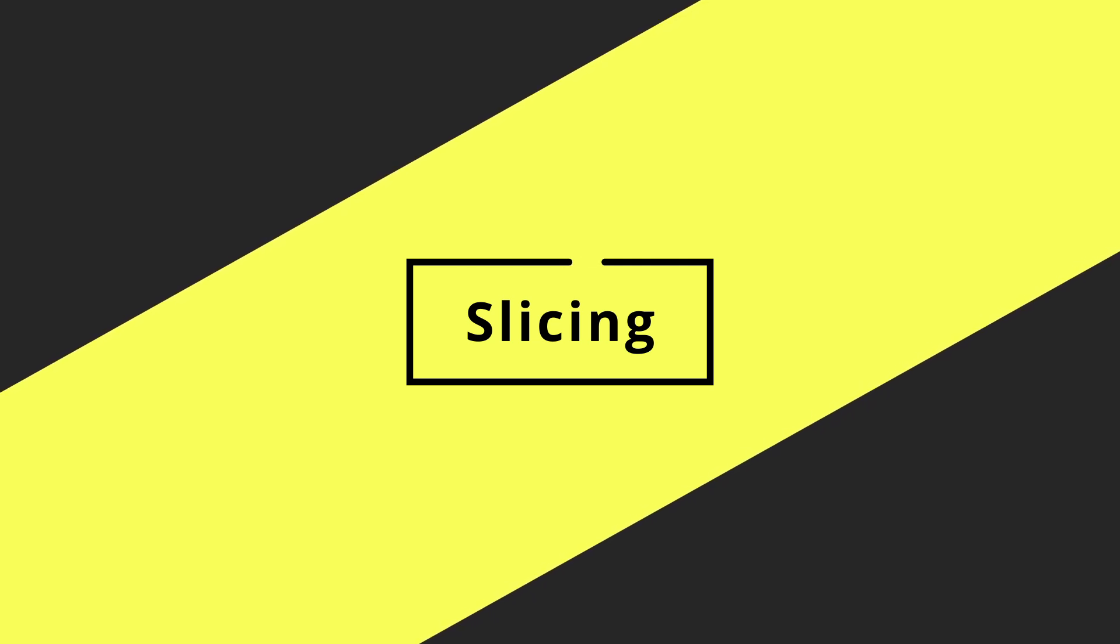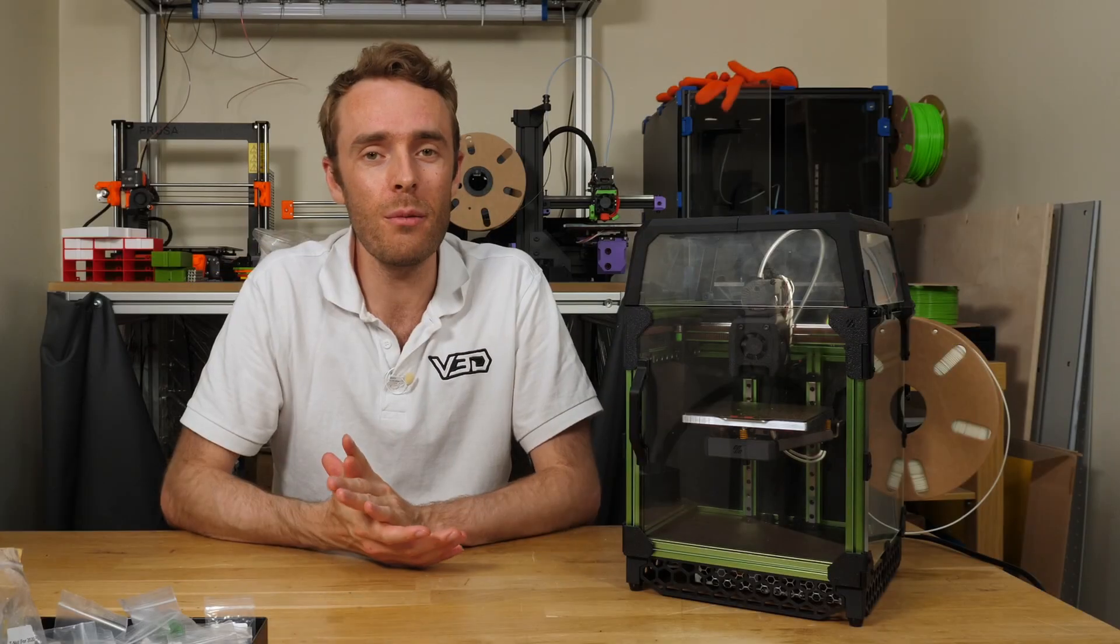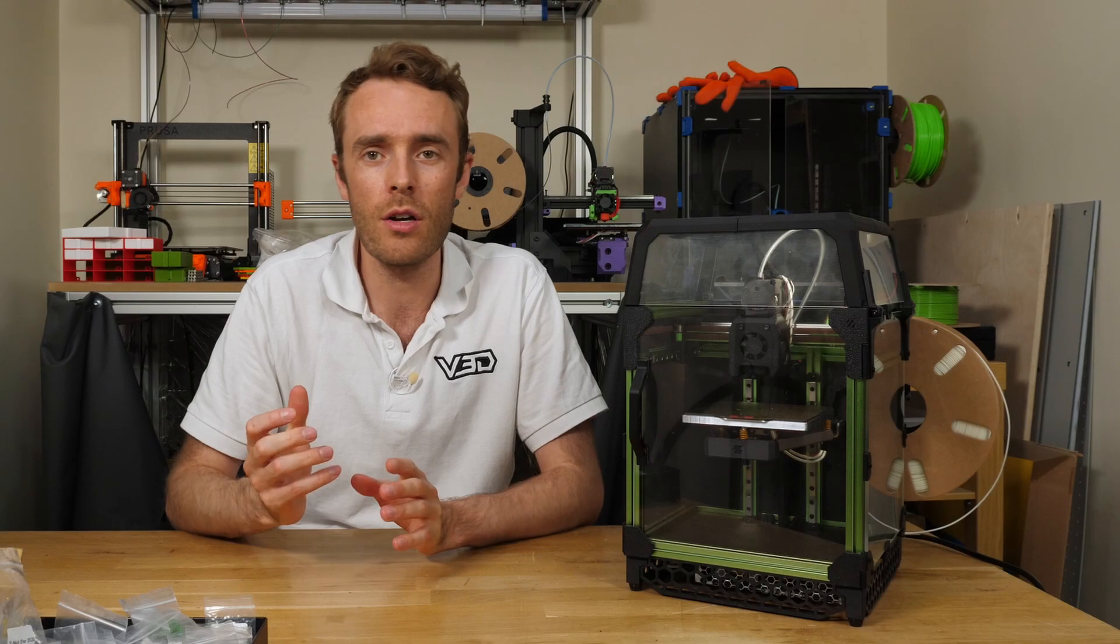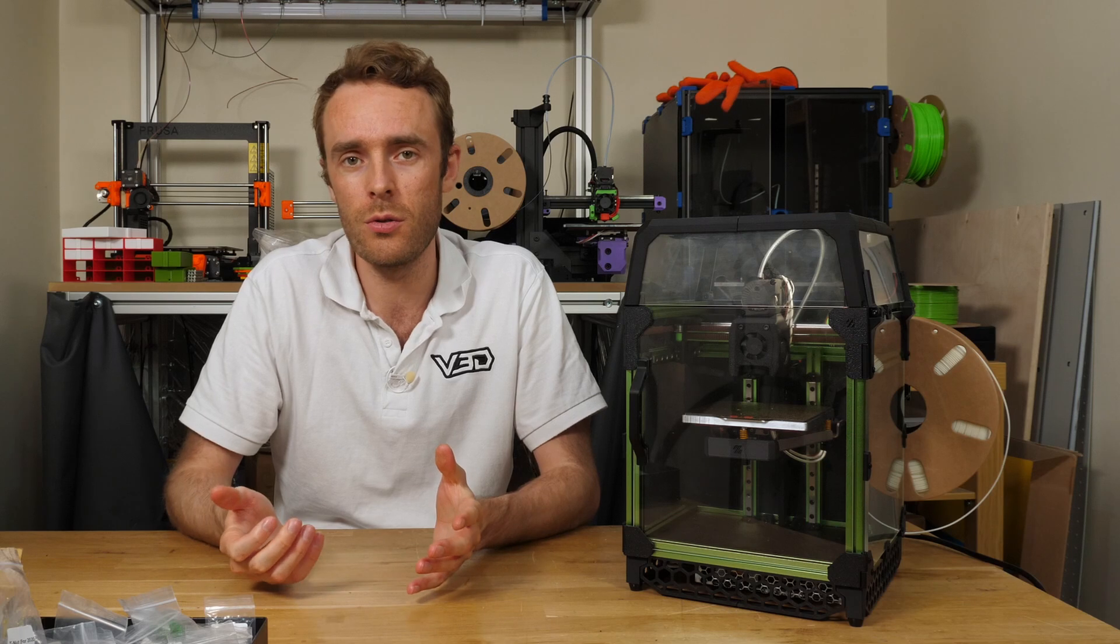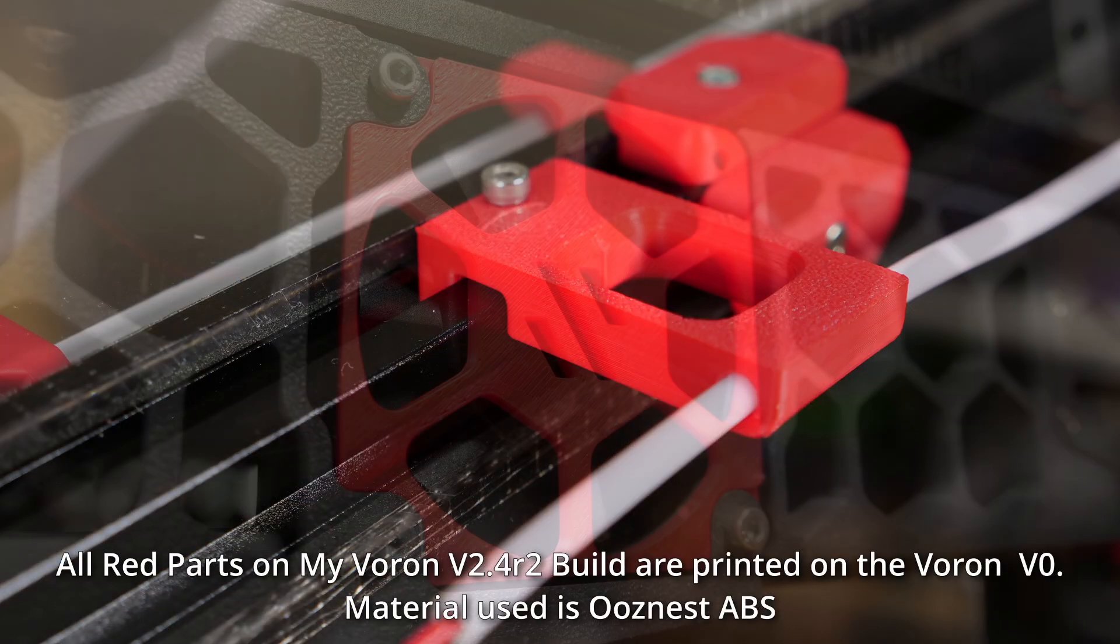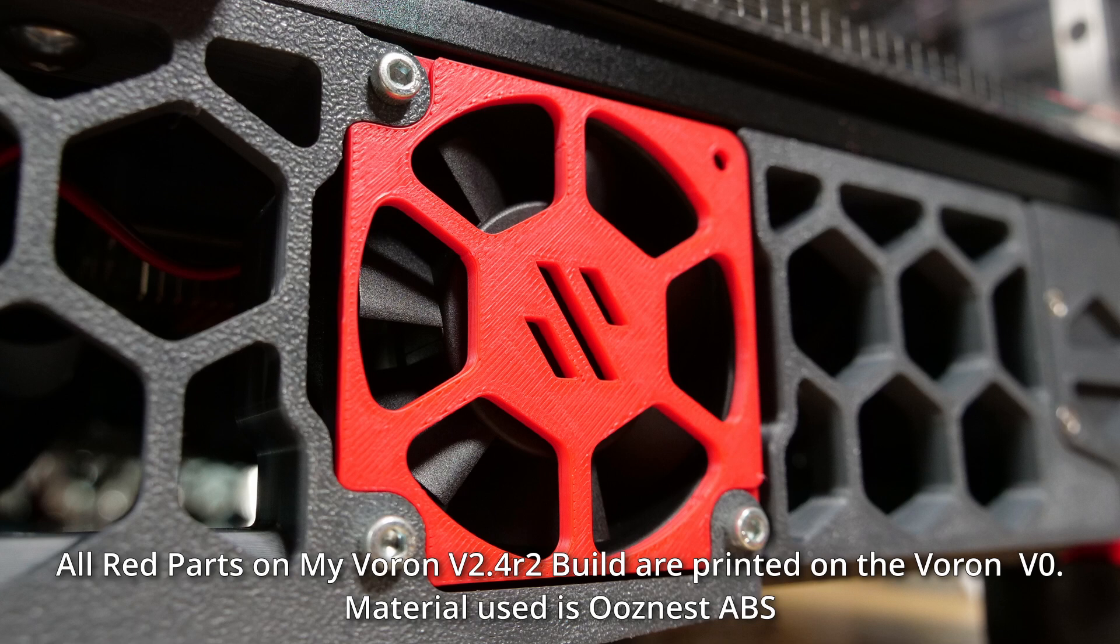When it comes to actually doing some 3D printing, the GitHub is probably the best location to get profiles for this printer, and those are for Super Slicer. If you've not used Super Slicer before then just think Prusa Slicer but with extra settings.